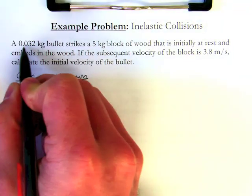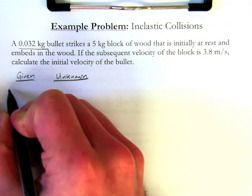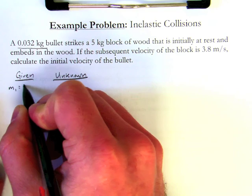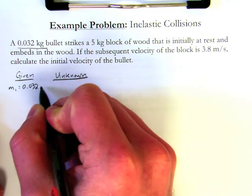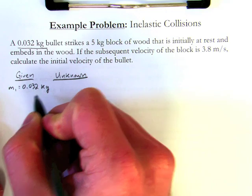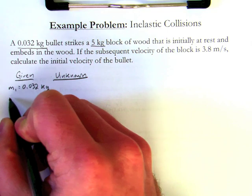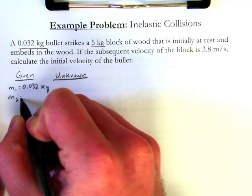First off, I know a bullet, so the mass of a bullet is going to be 0.032 kg. I know the block of wood, so the mass of 2 is going to be 5 kg.